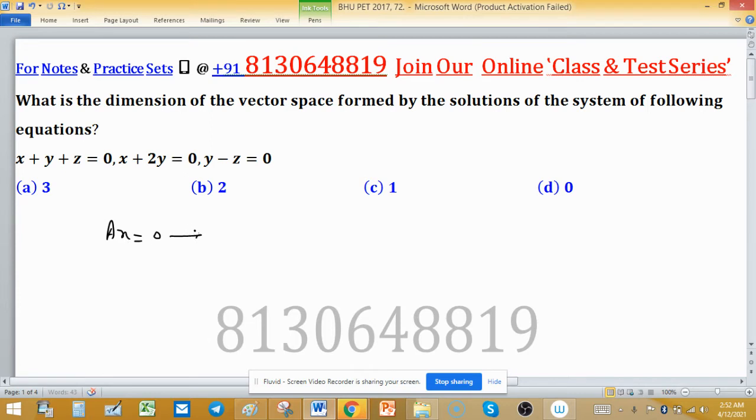It means all solutions will be in the null space. Solutions that satisfy this system Ax = 0 will be in the null space of A. All solutions of this system and the dimension of this vector space...